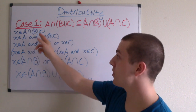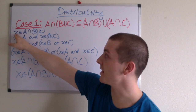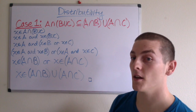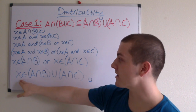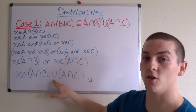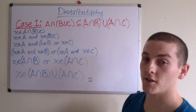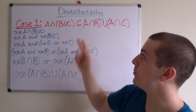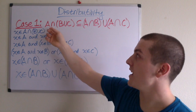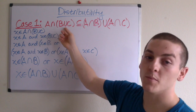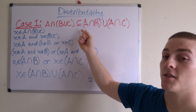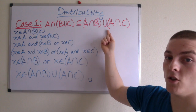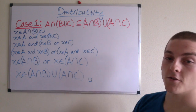So there you have it. We've shown that since X is an element of A intersection (B union C) and X is an element of (A intersection B) union (A intersection C), X is in both of these, and therefore A intersection (B union C) is in fact a subset of (A intersection B) union (A intersection C).